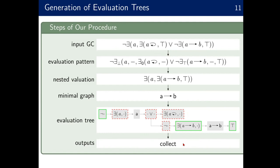It's important to note that some steps don't generate a single result: one graph condition can generate multiple evaluation patterns, one nested valuation can generate multiple minimal graphs, and one graph can generate multiple evaluation trees — that's why the resulting set is not always a singleton.